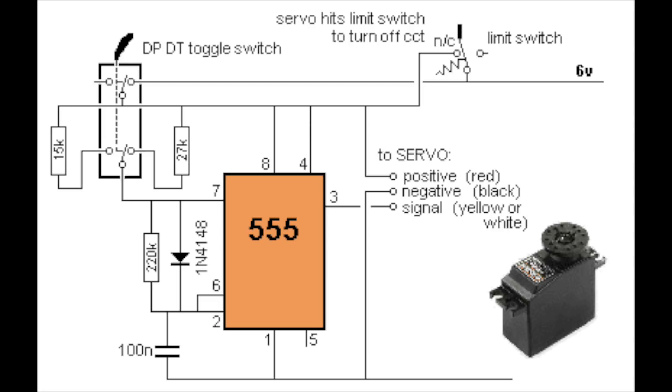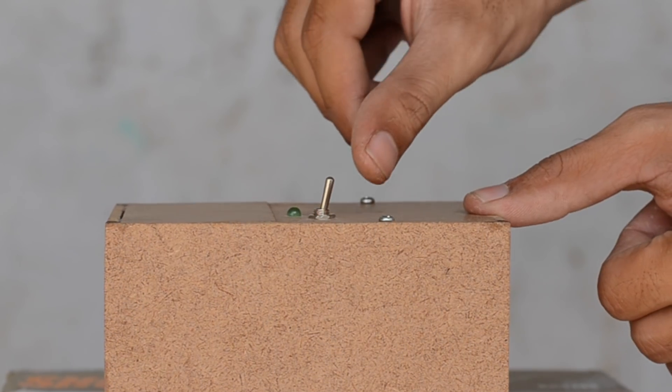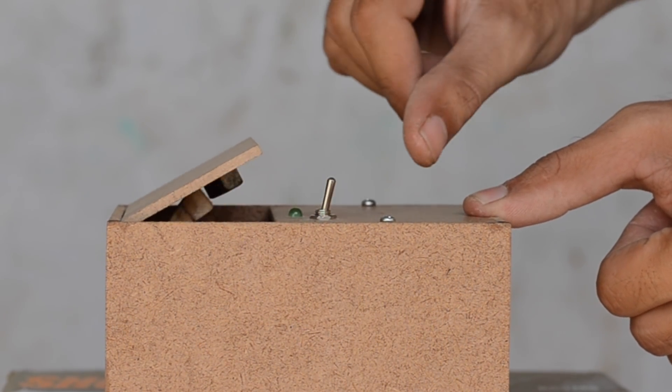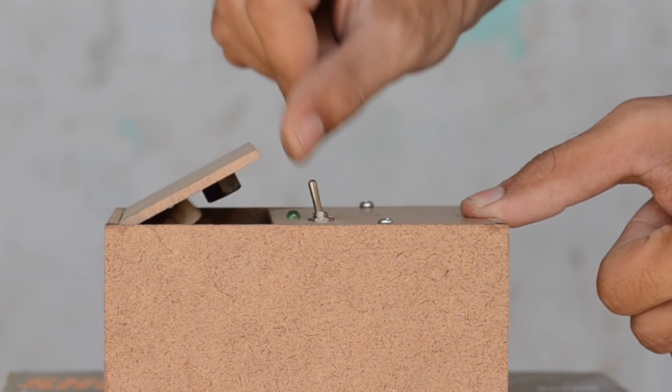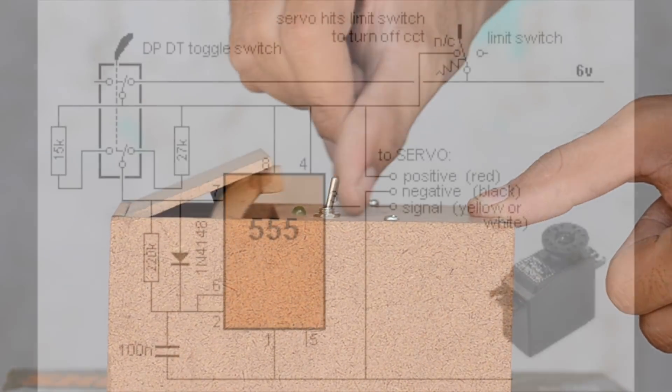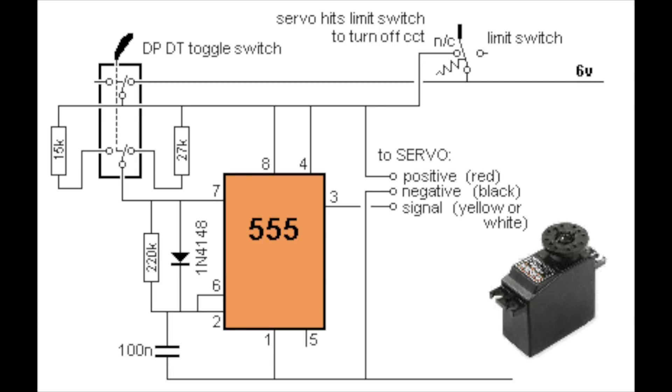Here I've used a 555 timer IC in combination with a DPDT toggle switch. It not only activates the servo motor as we hit the switch, but it also reverses the rotation to retract the arm inside the box by selecting between 1 millisecond to 2 millisecond pulse widths, while the arm is being stopped by a limiting switch over there.